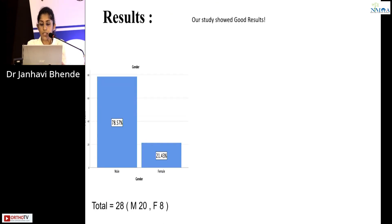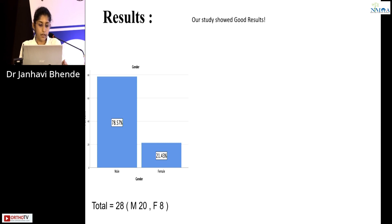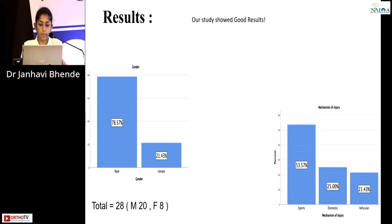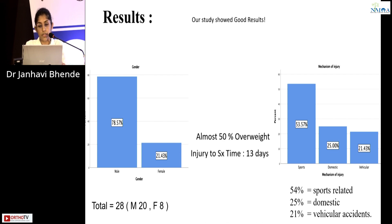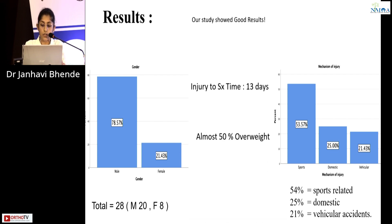Our study had a total of 28 patients, of which 20 were males and 8 were female. 54% of injuries were sports-related, 25% were domestic and 21% were vehicular accidents. Almost 50% of our patients were overweight. Injury to surgery time was 13 days.